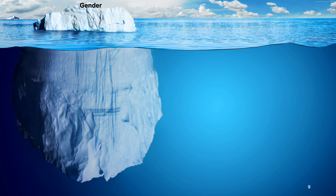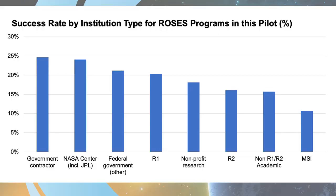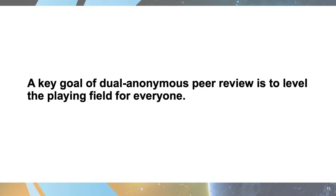This chart shows success rates by institution type for ROSES programs in the SMD pilot. Government contractors, federal government, and Research 1 universities all have in excess of a 20% success rate. But Research 2 universities and minority-serving institutions see dramatically lower success rates. One of the main motivations for moving to dual anonymous peer review is to level the playing field for everyone.